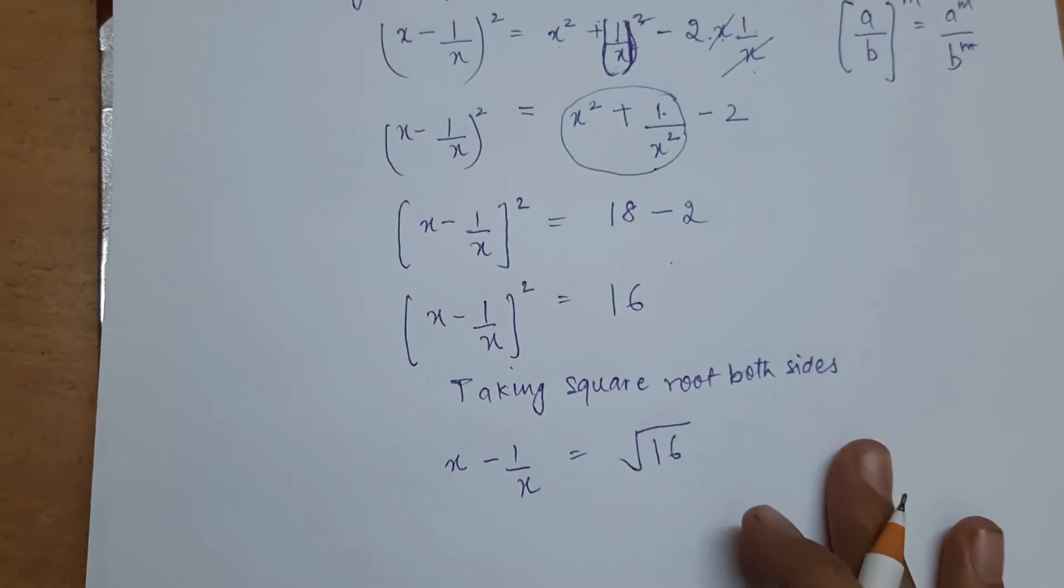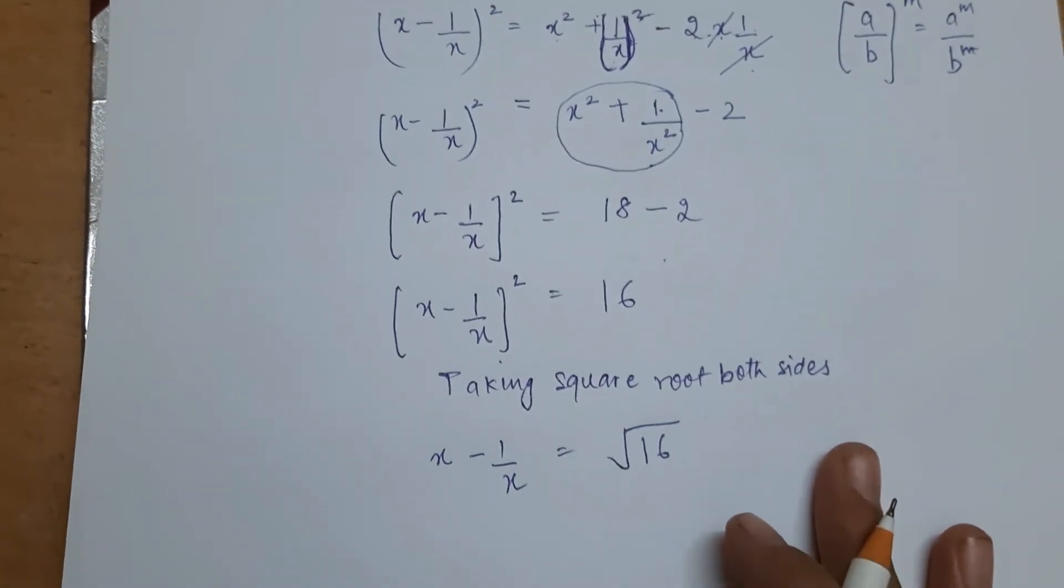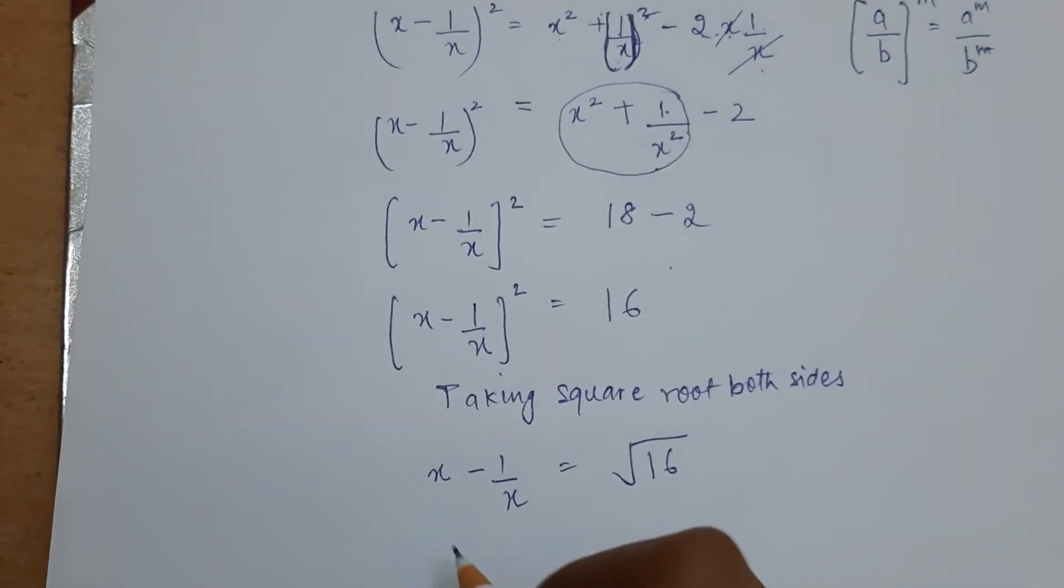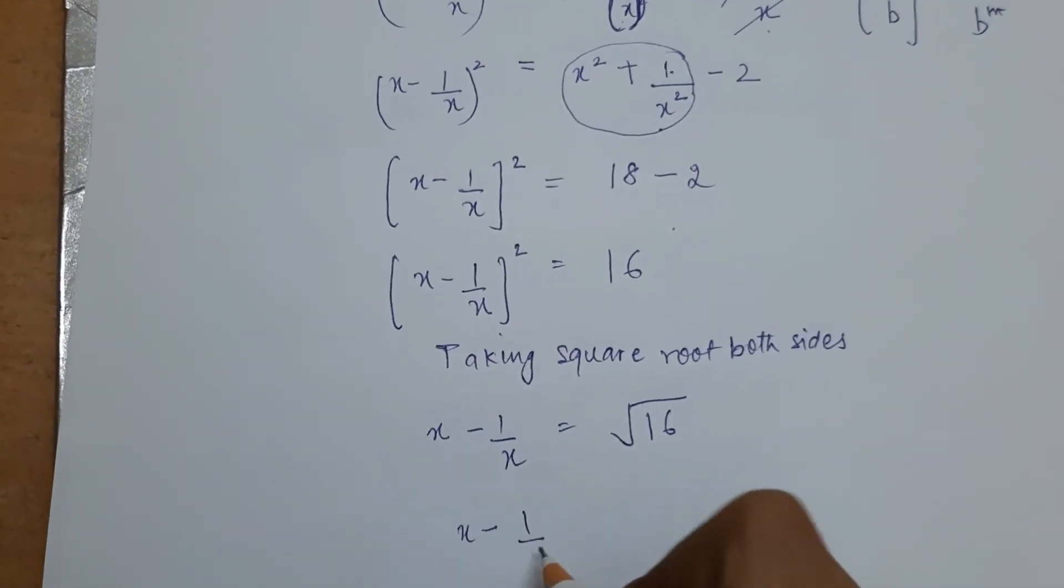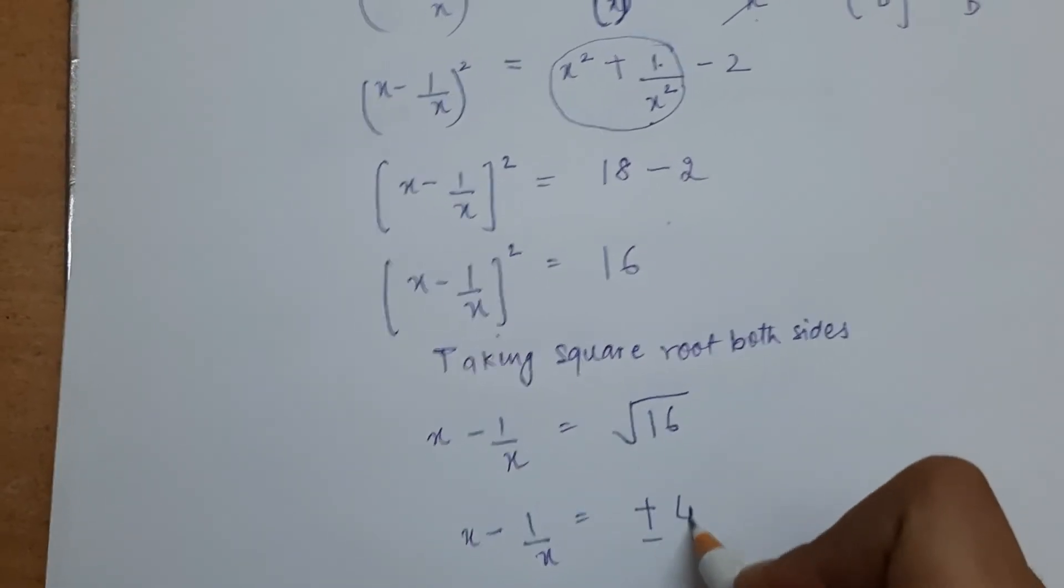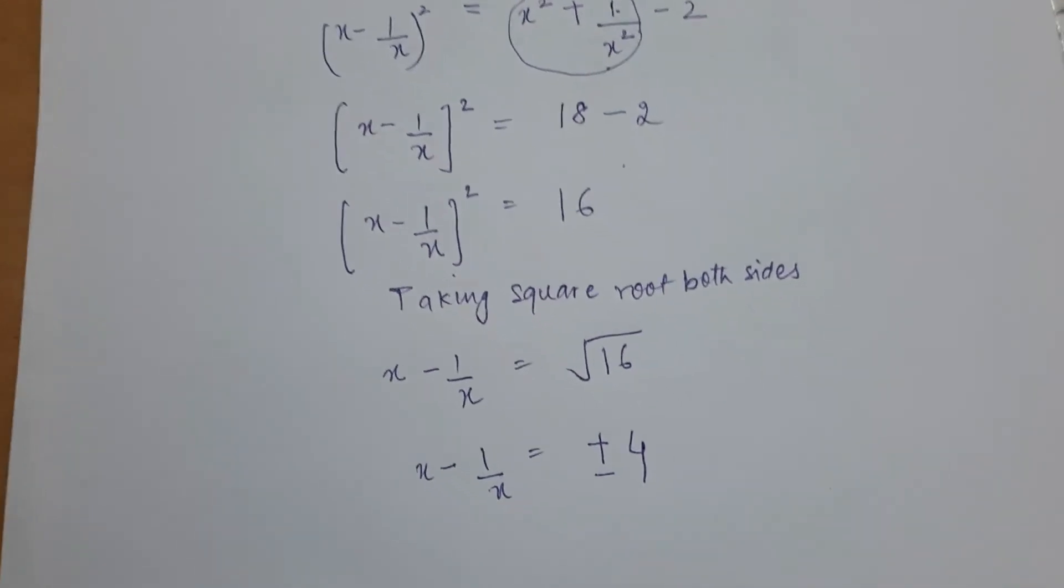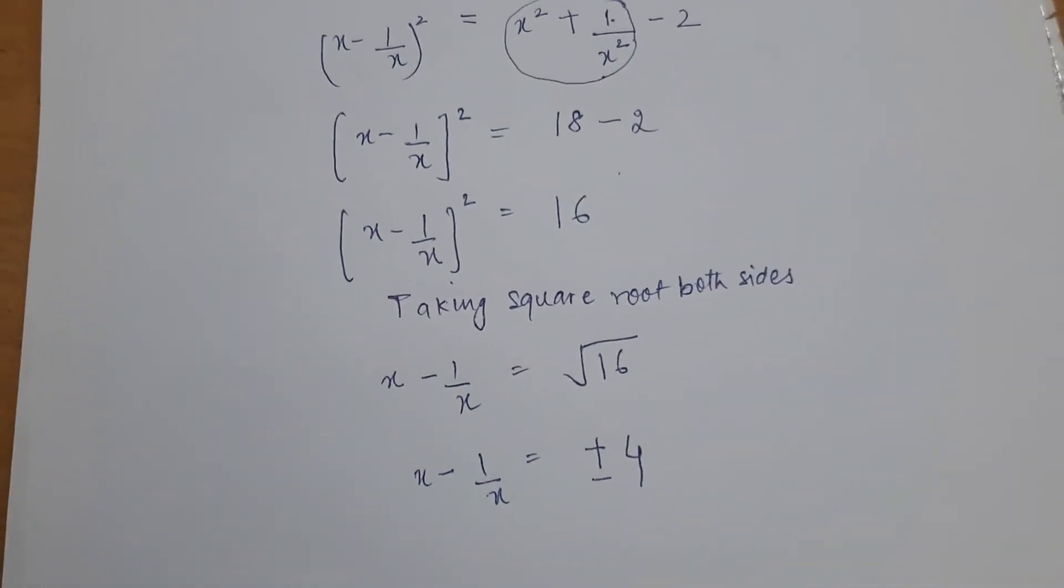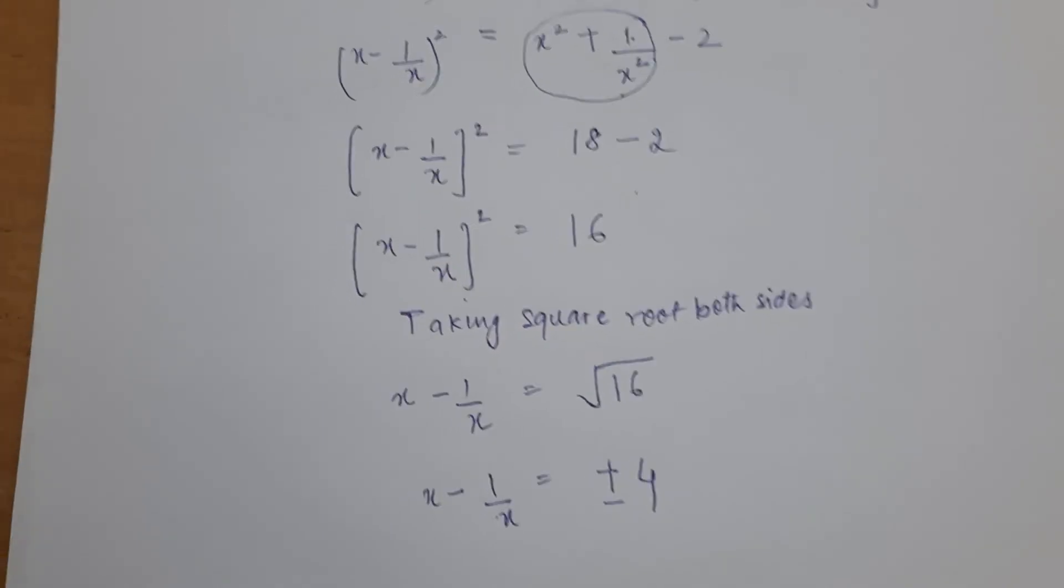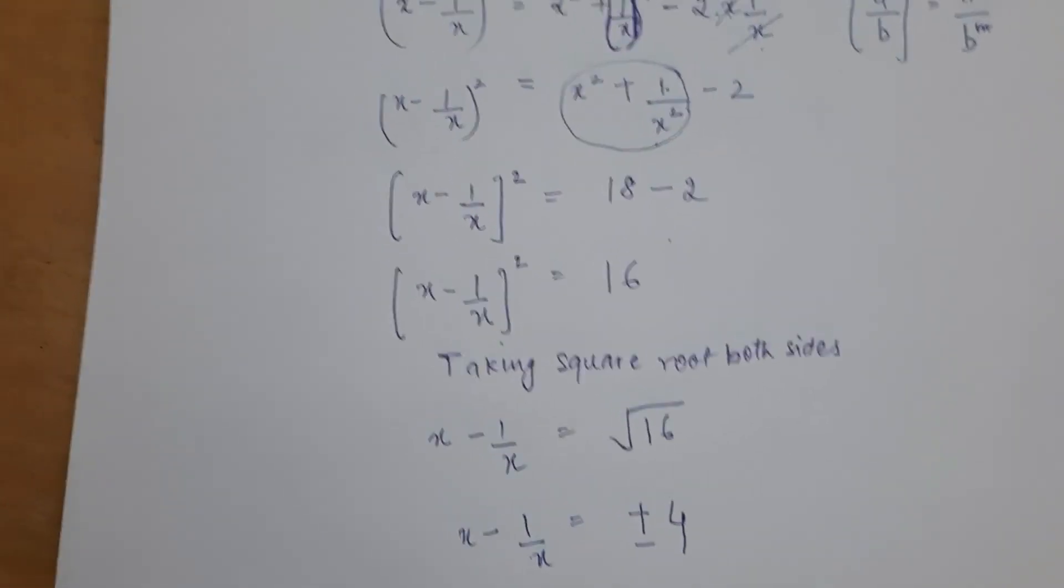And square root of 16 is plus minus 4, because when we take square root of any value, it gives both positive and negative values. Easy! Now what is the value? x minus 1 by x equals plus minus 4. This is how we write plus minus, because the value will come in positive and also in negative, since you applied square root.